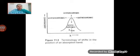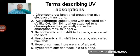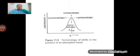Opposite to that is the hypochromic shift. In the hypochromic shift, there is a decrease in epsilon — epsilon being the absorption. So decrease in the intensity of absorption is called the hypochromic shift, and it occurs because of distortion of the geometry of the molecule.